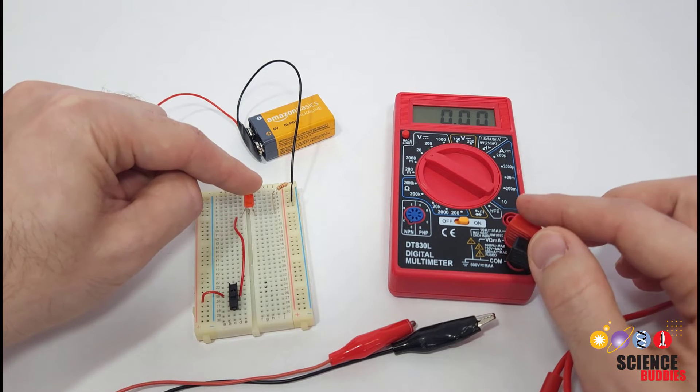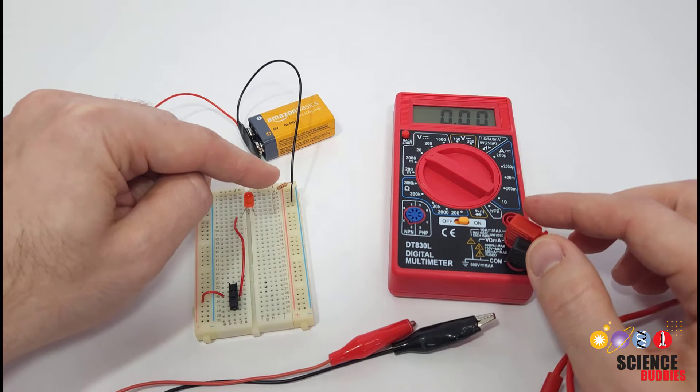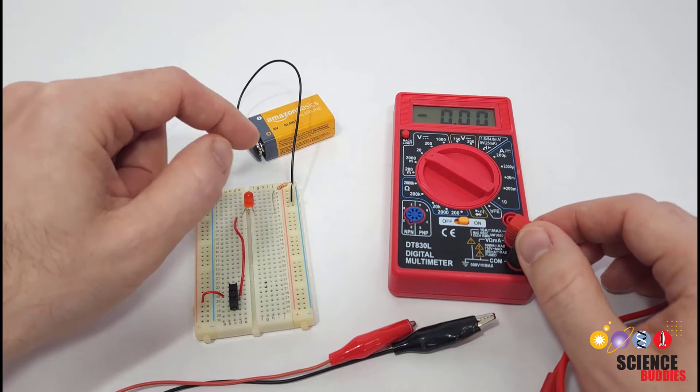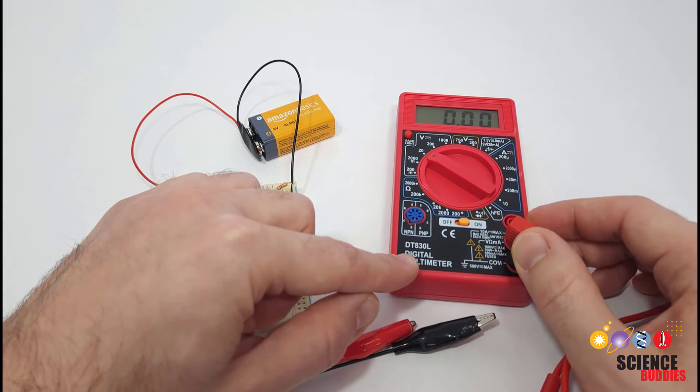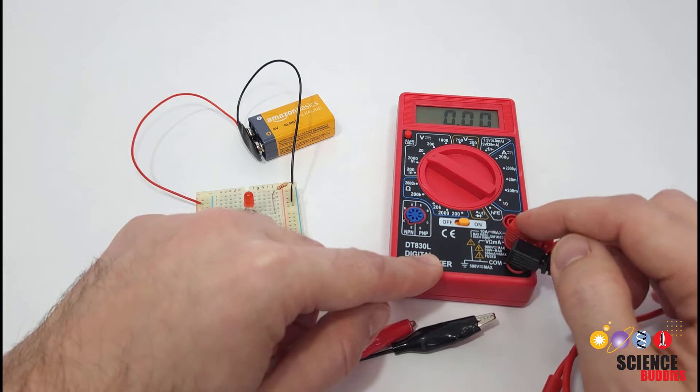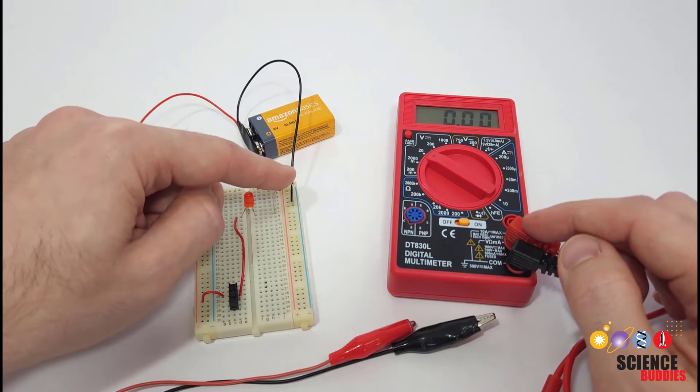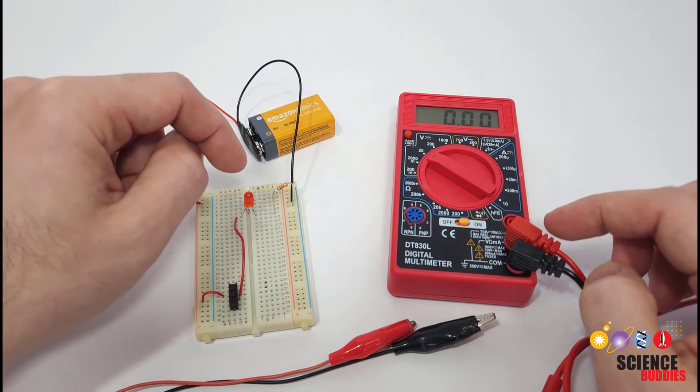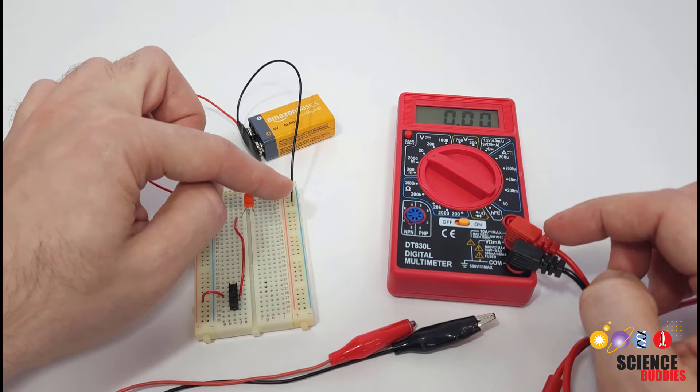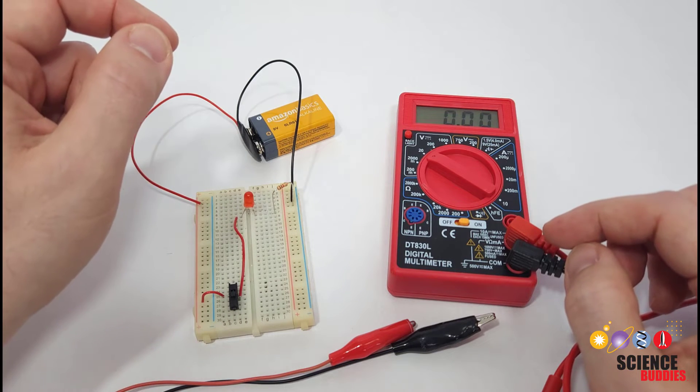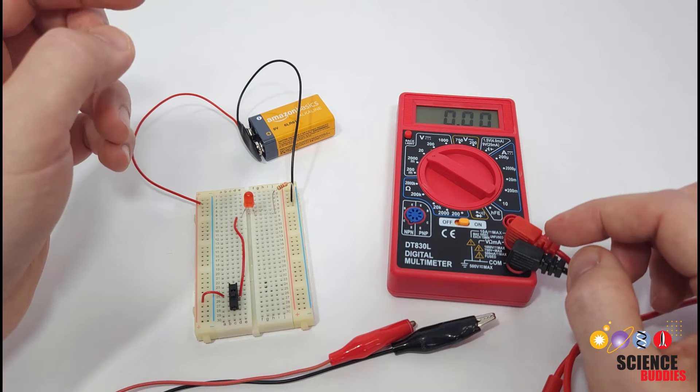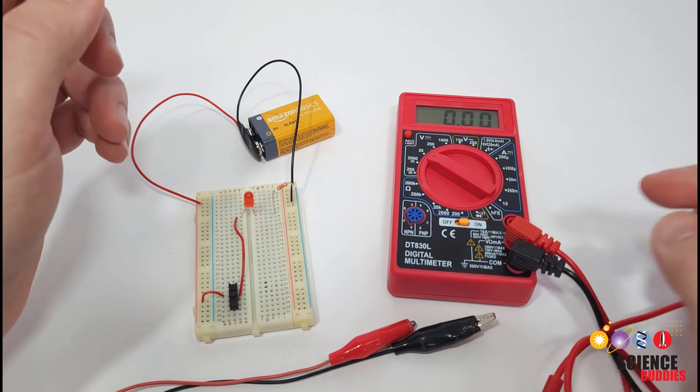We could put the multimeter in series with the other components in the circuit and measure the current directly, but if you do that, you run a higher risk of blowing your multimeter's fuse as you get to smaller and smaller resistors and higher and higher currents. By measuring the voltage across the resistor, we eliminate the risk of blowing the fuse, and then we just need to do a little math to calculate the current.